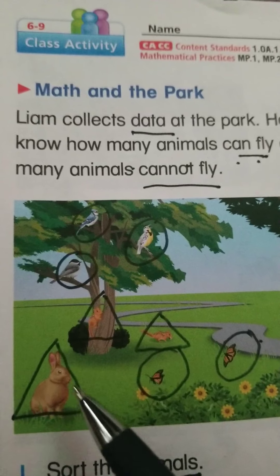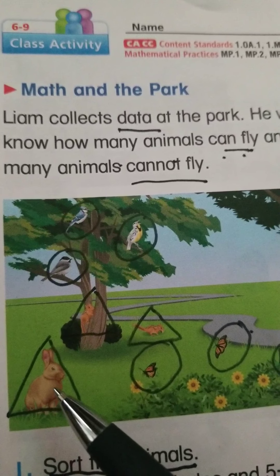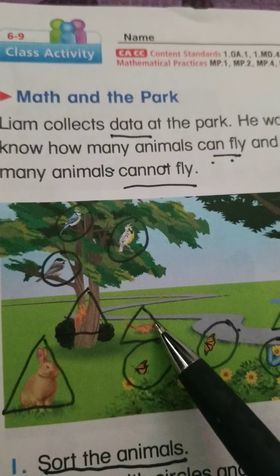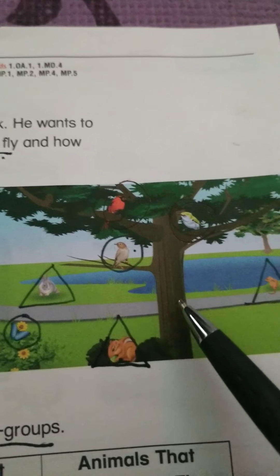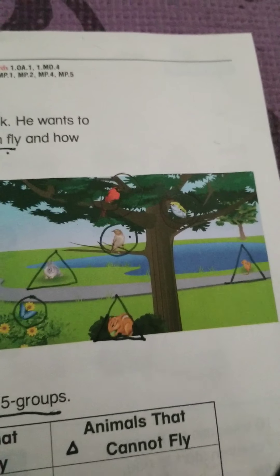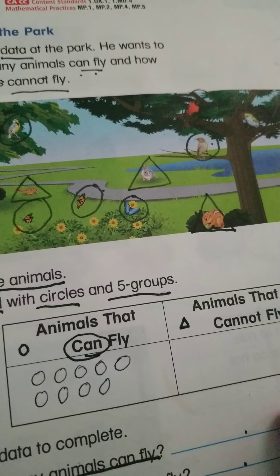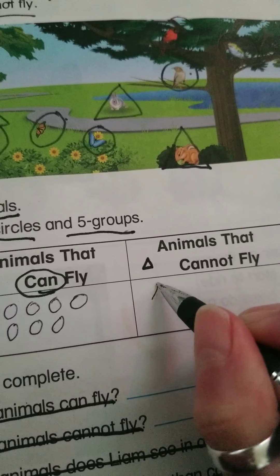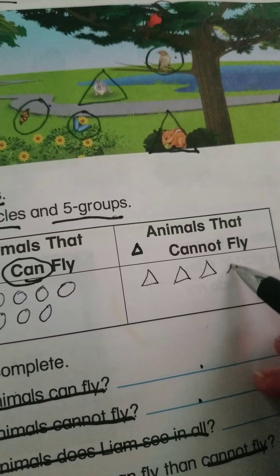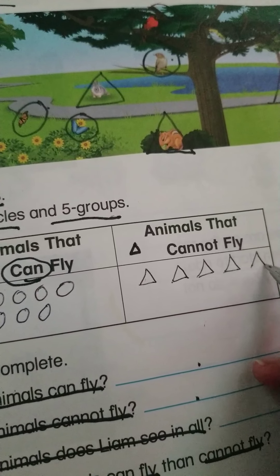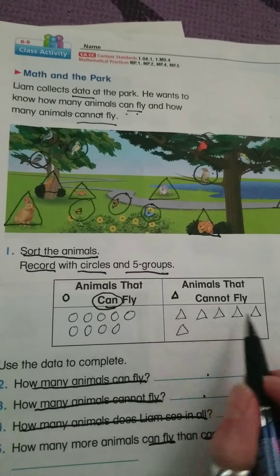Now I'm going to count my animals that cannot fly. I record with my phone so sorry if these look a bit rough. One, two, three, four, five, six — six animals that cannot fly. Those are squirrels and bunnies and things like that. So I draw six triangles: one, two, three, four, five, six triangles in five groups.